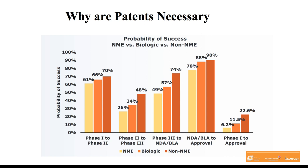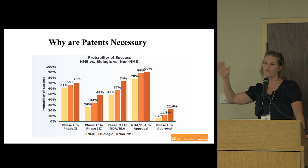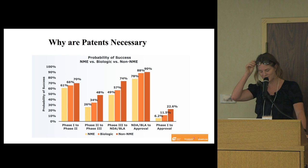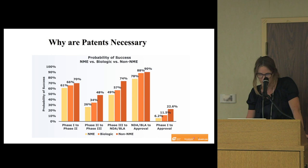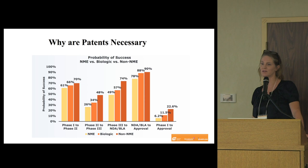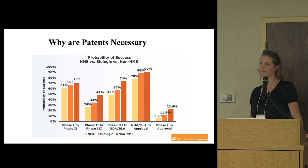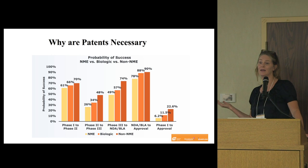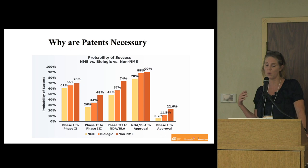This figure shows the probability of success, comparing new molecular entities — brand new compounds never approved for therapeutic use — to biologics, and to new formulations of already approved compounds. The success rate going from phase one all the way to approval is extremely low: for brand new compounds it's only 6.2 percent. So not only is it a lot of money, but the chance that all that money will be lost is extremely high. That's why it doesn't make sense most of the time to pay for that kind of work with public sector money.